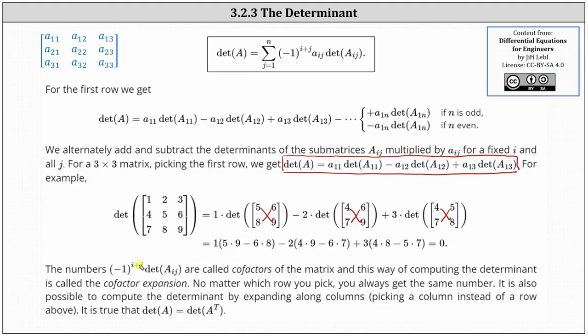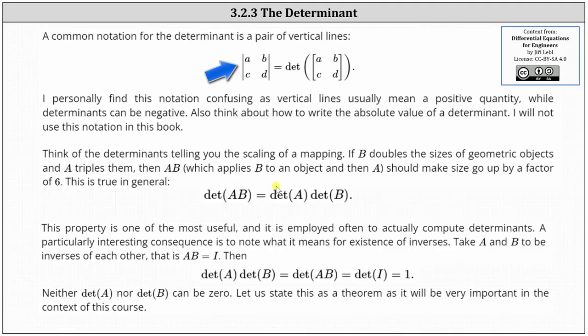The numbers negative one to the power of i plus j times the determinant of matrix A sub ij are called cofactors of the matrix, and this way of computing the determinant is called the cofactor expansion method. No matter which row we pick we always get the same number. It is also possible to compute the determinant by expanding along columns. It is true that the determinant of matrix A equals the determinant of the transpose of matrix A. A common notation for the determinant is a pair of vertical lines, but this can be confused with absolute value — since a determinant can be negative, we'll stick to the det notation.